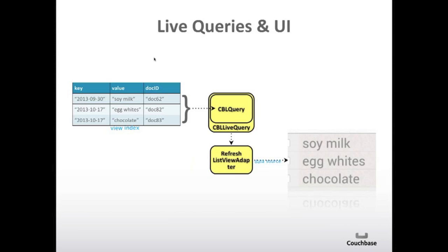This is what a live query would look like. You have your view index on the left with a few records, and you have a CBLQuery that defines that result set. That CBLQuery gets wrapped in a live query, and whenever this result set changes in any way — for example, if a new record was added with the key of 2013-10-05, which would become the new second row — that will trigger the live query to call back your function, and your function could refresh the list view adapter, showing the new set of rows in the UI.